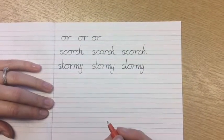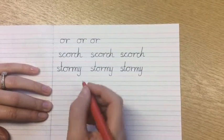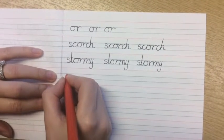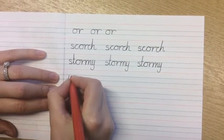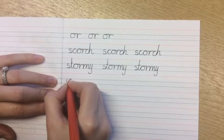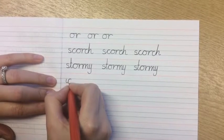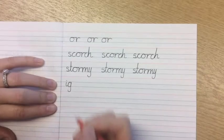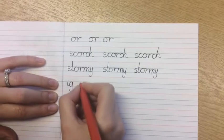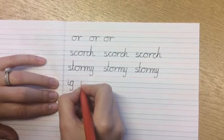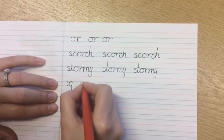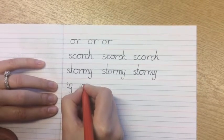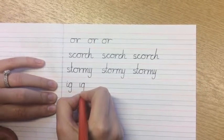Now we're going to look at joining the I to the G. So we go down, up, curve around, back around, down with the descender, dot the I. So we curve to the top of the G, back round, up and down.